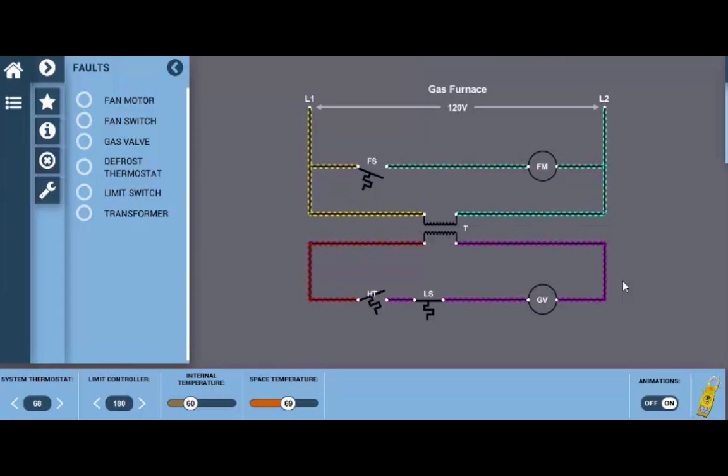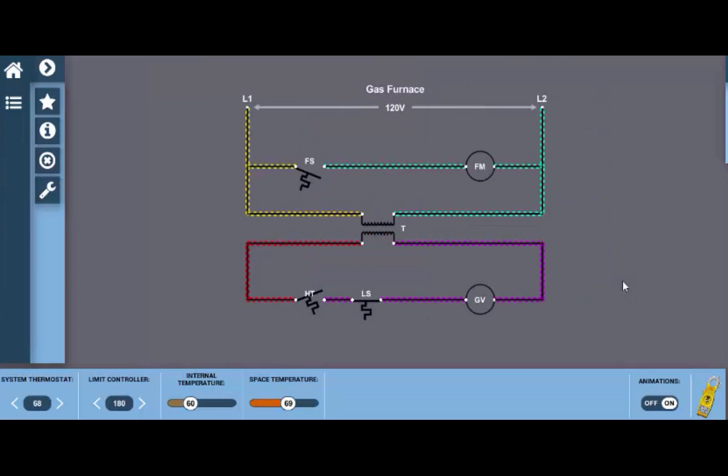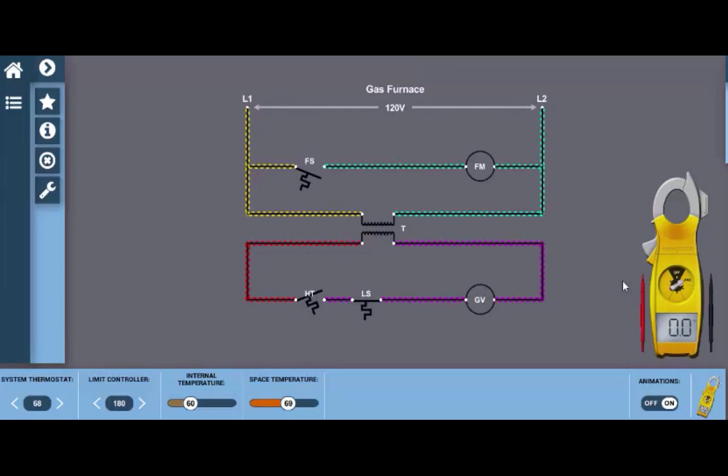So for example if we were to put a fault in the fan switch here we click on this. Now what we can do is we can take the meter out of the toolbox down here turn it to AC volts and we can drop these leads at any of the glowing hot spots that we see here. I'm going to store them temporarily. Now when I come down here I'm going to turn the system thermostat to call for heat. So I'm going to turn it up above the room temperature and as we can see the thermostat closed we have power to the gas valve.